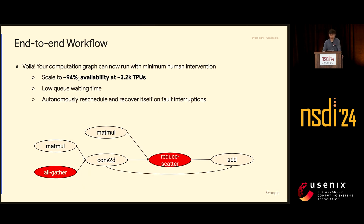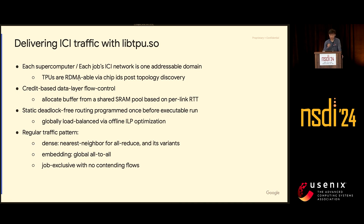With this system, we can scale the supercomputer to about 94% availability at around 3K TPUs. To further boost availability from 94%, we look at how we route ICI packets. Each job has one addressable domain, we do flow control at the data layer, and we don't need advanced congestion control because we have an exclusive network — the job owns all the resources it has. With regular traffic patterns, a static routing algorithm suffices to load balance everything.